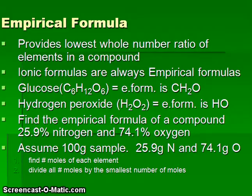Empirical formulas provide the lowest whole number ratio of elements in a compound. This can be used for ionic compounds, also for covalently bonded molecules as well. Ionic formulas are always going to be empirical formulas.